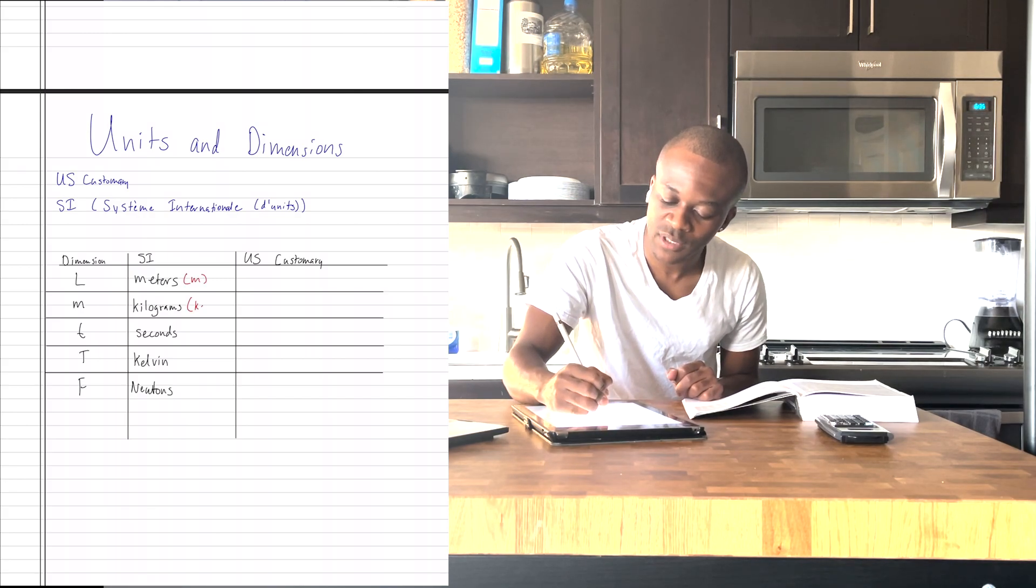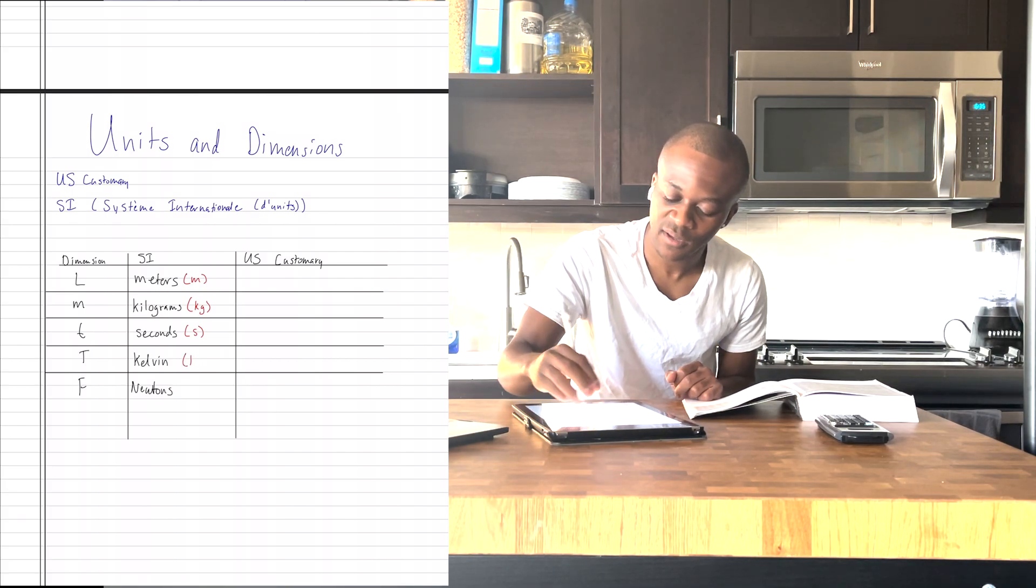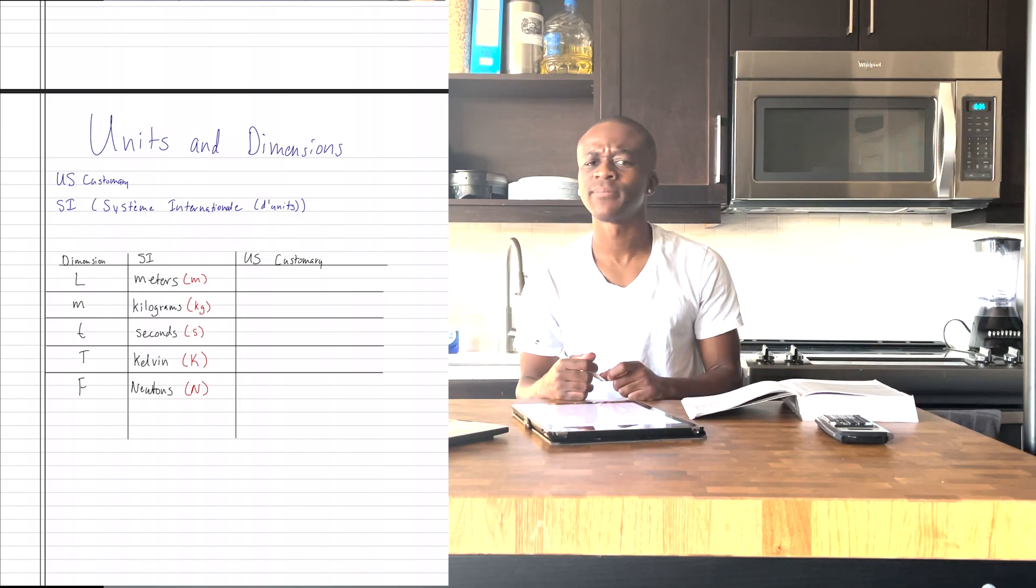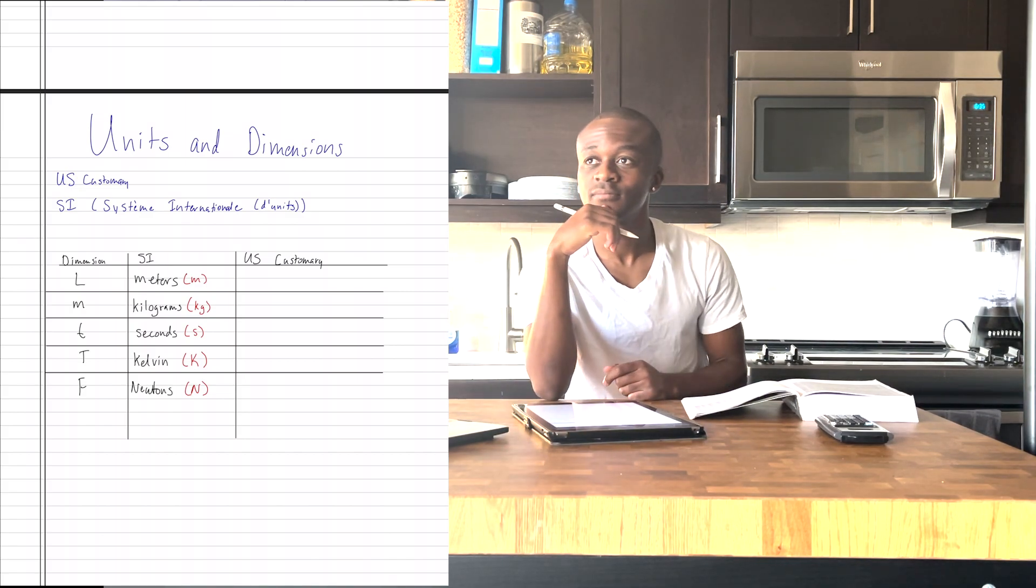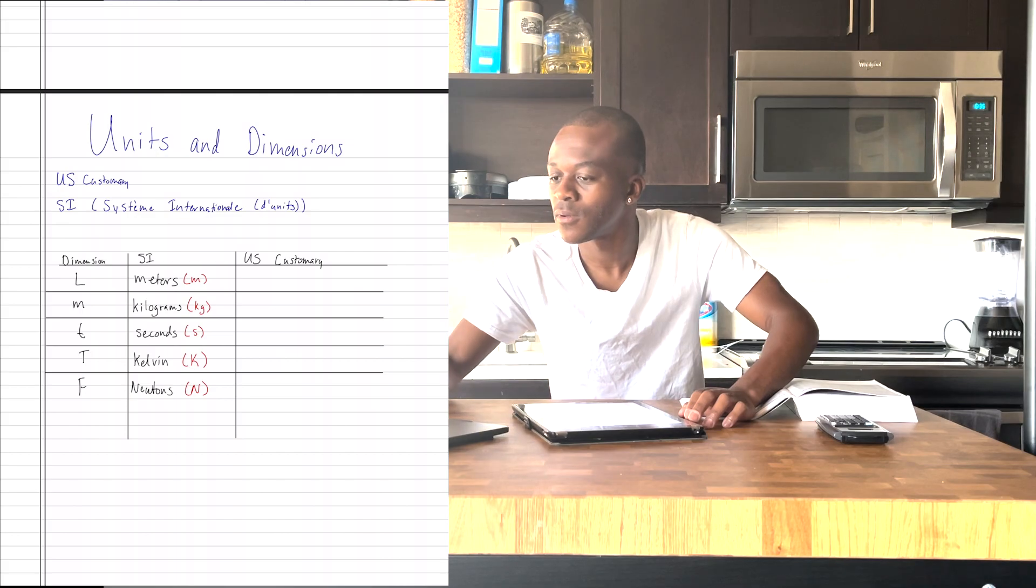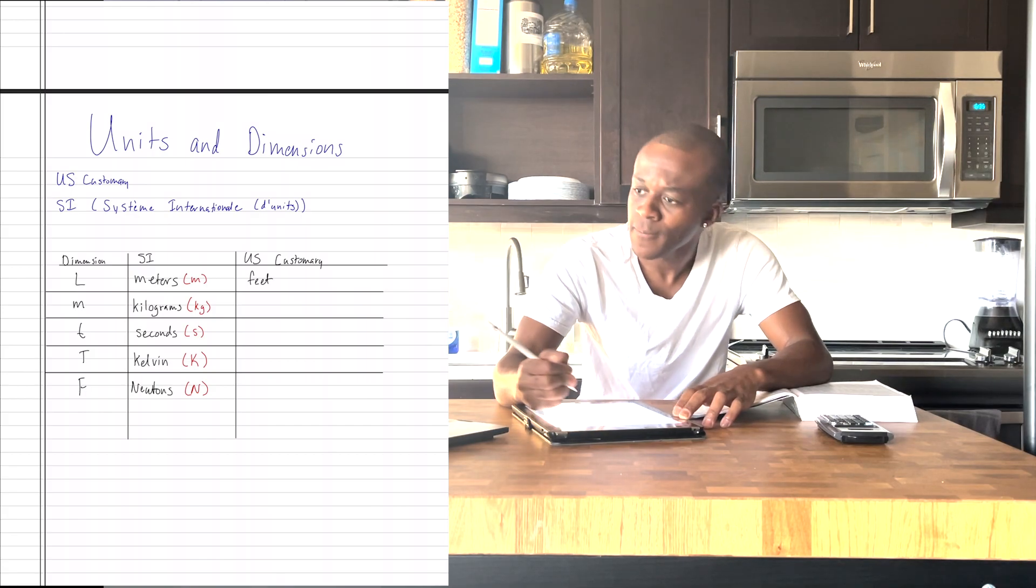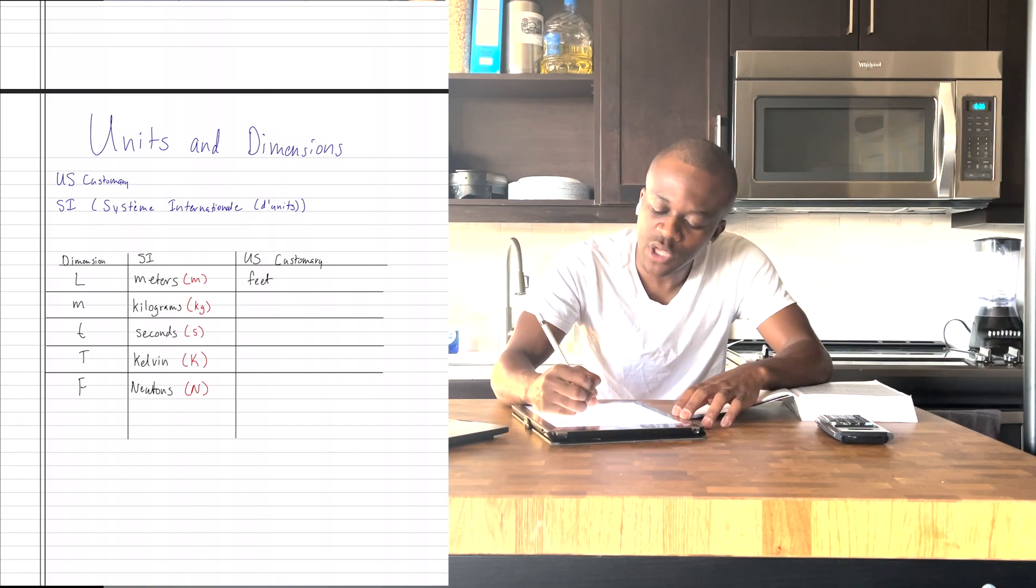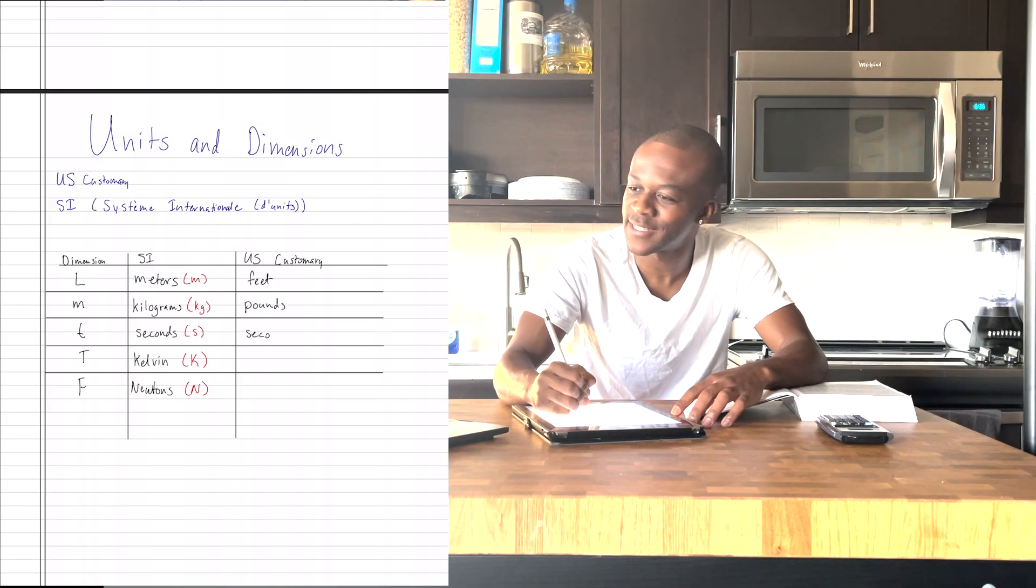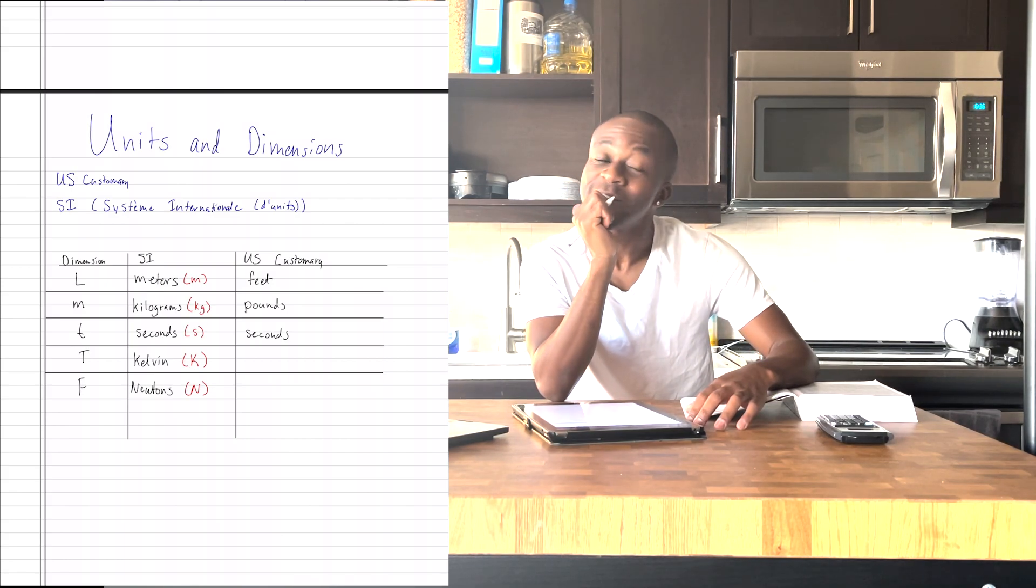This is how we denote these. That's a capital K for Kelvin. Newtons are given by N. U.S. customary length, what do we use? Feet. Let me just double check myself. It is feet. So we use something called pounds here, but I'm going to talk a little bit about why we use pounds. We also use seconds here.